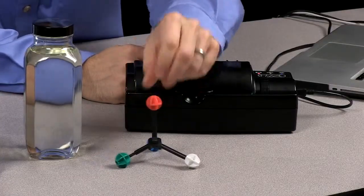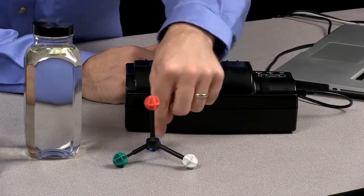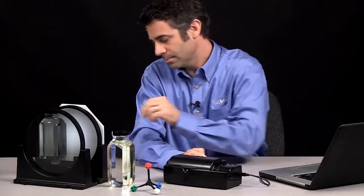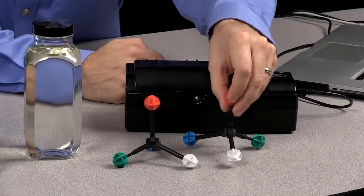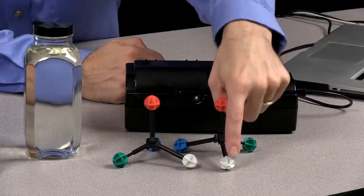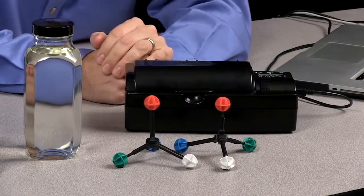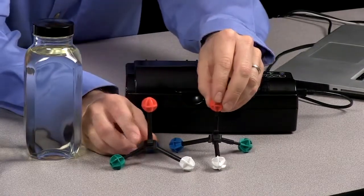So assume this is a compound with a central atom and four different atoms attached to it. This is the same central atom with the same four different atoms attached to it, but these are actually different compounds.